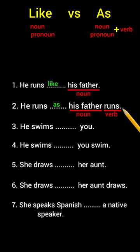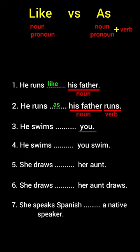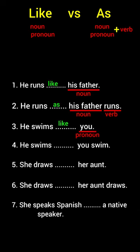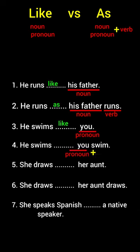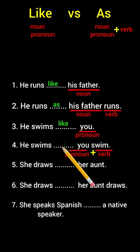He swims ___ you. You is a pronoun, so we say he swims like you. He swims ___ you swim. You is a pronoun plus swim is a verb, so we use as: he swims as you swim.